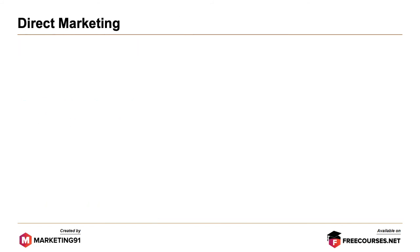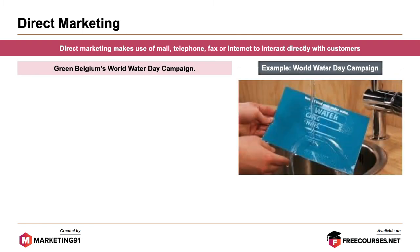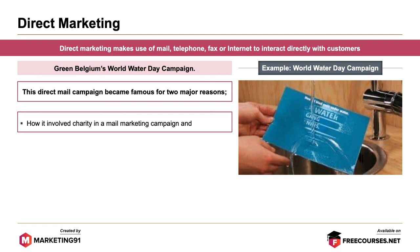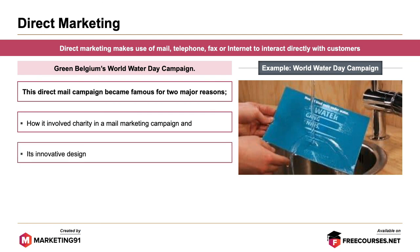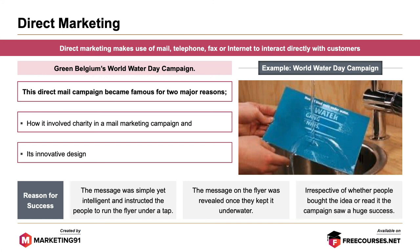Next, direct marketing. Direct marketing makes use of mail, telephone, fax or internet to interact directly with customers. The example is Green Belgium's World Water Day campaign. This direct mail campaign became famous for two major reasons: how it involved charity in a mail marketing campaign, and its innovative design. The message was simple yet intelligent and instructed people to run the flyer under a tap. The message in the flyer was revealed once kept under water. The campaign saw a huge success.